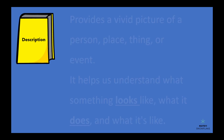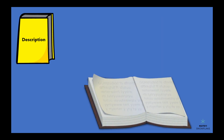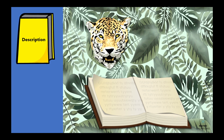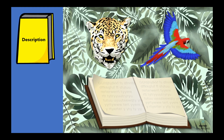For example, when we're reading about the Amazon rainforest, the description of its lush vegetation, diverse wildlife, and exotic birds paints a picture in our minds and helps us understand what the Amazon rainforest is like.